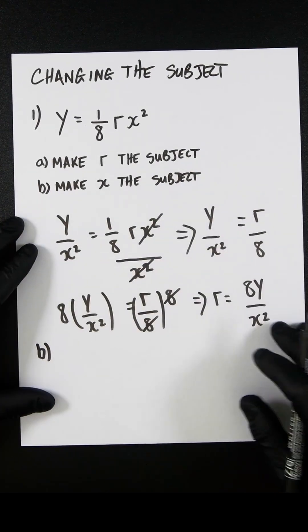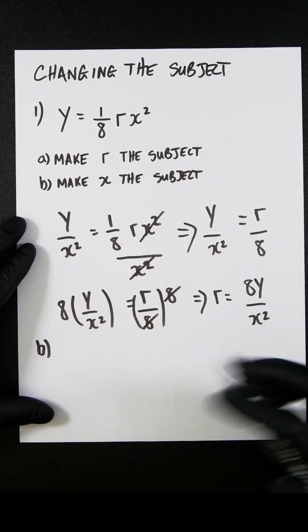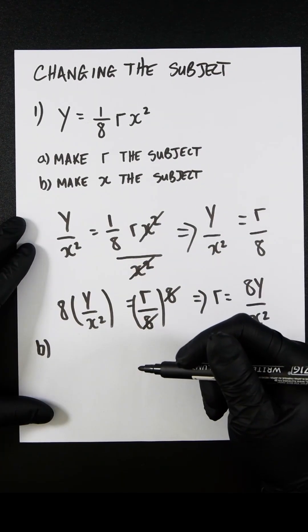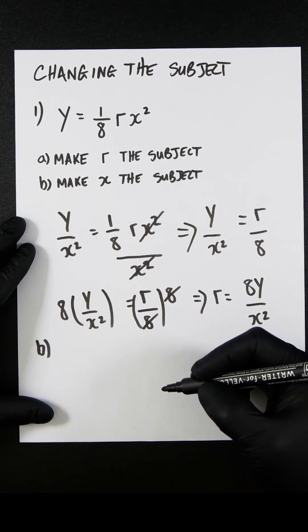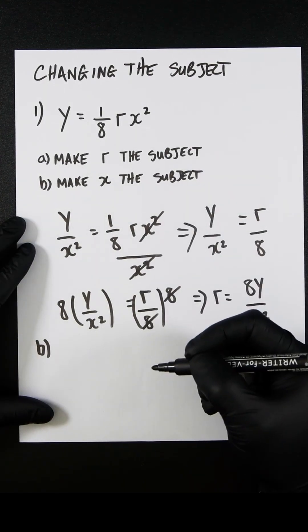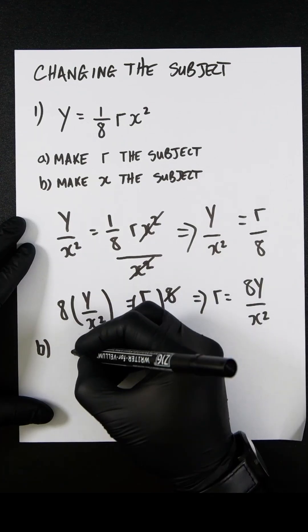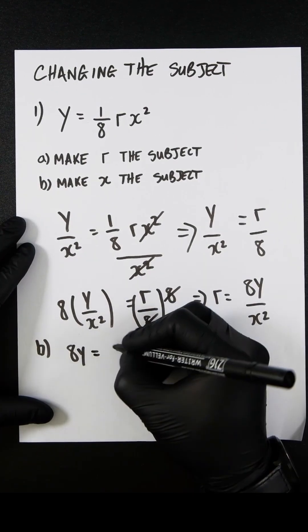Let's now make x the subject. Very similar to what we did in the last example. We'll multiply everything by 8 to get rid of this 8 on the right-hand side.